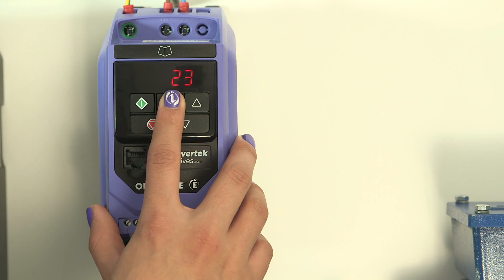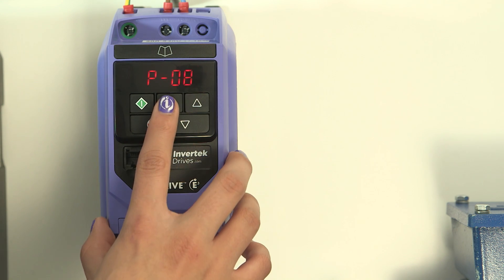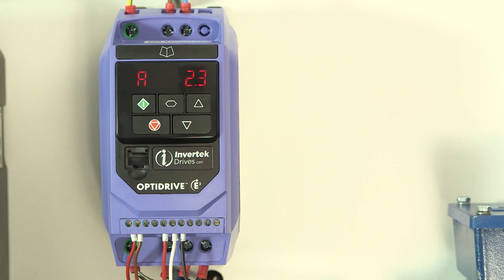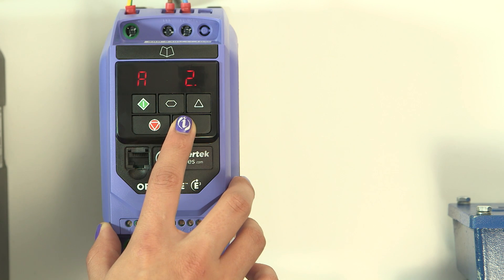Press navigate again and then scroll to the next parameter, parameter 8. This is the motor current rating which is important for protection. The rating plate on this motor says 1.9A for delta connection which we have here. Set that using the up and down arrows.